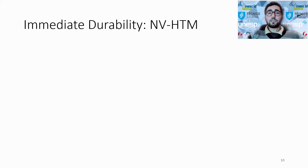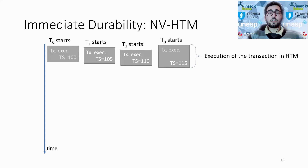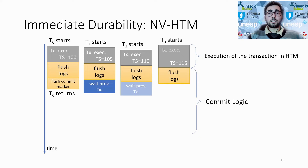NVHTM's design is similar to our SPHT system. However, NVHTM incurs a bottleneck in order to satisfy immediate durability, which I will illustrate in this slide. Assume four concurrent transactions. Each of them first executes in HTM and obtains a physical clock that serializes their position in the per-thread log. Then each flushes their log, but not the final commit marker that will tell the log-replayer that the log transaction is ready to be replayed.